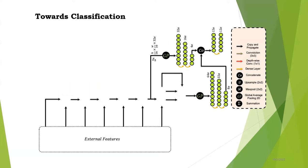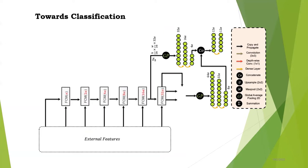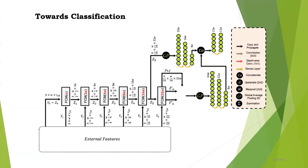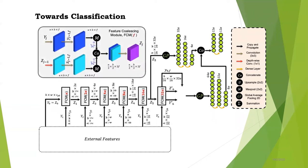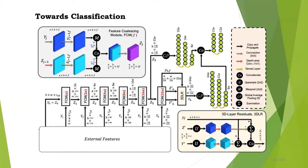On the classification side, we take external features from the encoder and decoder and pass them through an FCM block — the Feature Coalescing Module — parameterized by f, the sizes of which are shown here. The final outputs of the FCM32-alpha block are passed through the 3DLR, which stands for 3D layer residuals. The residual R6 and feature map Z5 are globally average-pooled to get dense layers, followed by additional dense layers that are concatenated and fully connected to get the final output lambda — our classification feature extraction output, parameterized by yj's and a filter multiplier alpha.